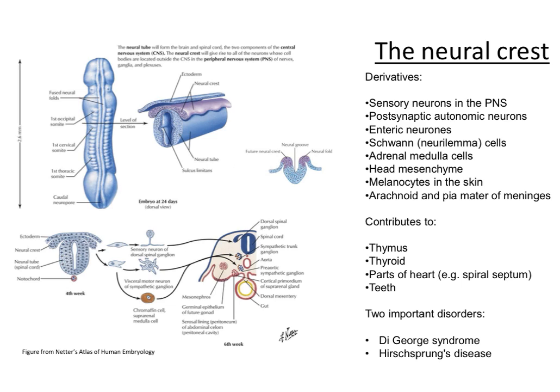Furthermore, the neural crest forms the arachnoid and the pia mater of the meninges — these are the so-called leptomeninges. In addition to this, neural crest contributes to the thymus and thyroid glands, and parts of the heart. The spiral septum, which separates the truncus arteriosus into the aorta and the pulmonary trunk, has a large contribution from neural crest.